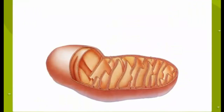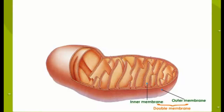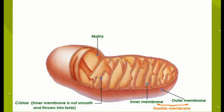Electron microscopic studies reveal that a mitochondrion is bound by a double membrane. The outer membrane is smooth while the inner membrane is rough. The interior of the mitochondrion is the ground substance called the matrix. It is divided into a number of incomplete chambers due to the invagination of the inner membrane. These finger-like projections are called cristae.